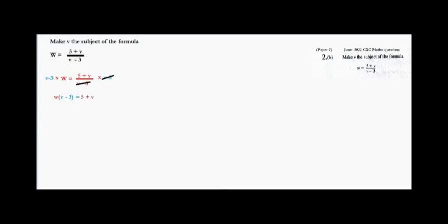Now we have W times (V minus 3) equal 5 plus V. I am going to use W to multiply everything in the bracket. W times V gives us WV, and W times minus 3 gives minus 3W. So after expanding we get WV minus 3W equal 5 plus V.